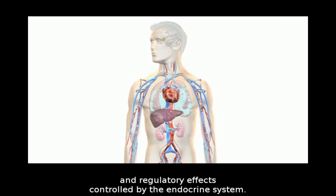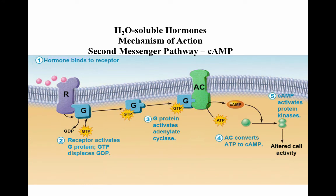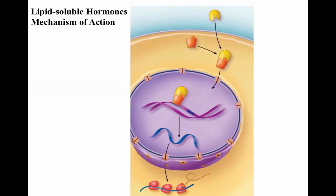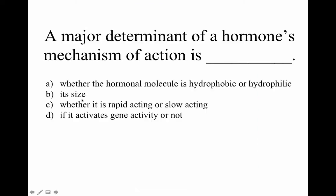That video shows a nice way of thinking about how the second messenger pathway works for water-soluble hormones. In contrast, lipid-soluble hormones pass through the plasma membrane into the cell, where their receptors are located inside. Once merged with a receptor, they can enter the nucleus and effect changes with DNA, creating new proteins from the messenger RNA produced.